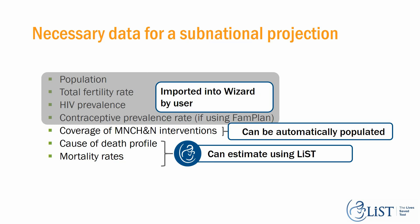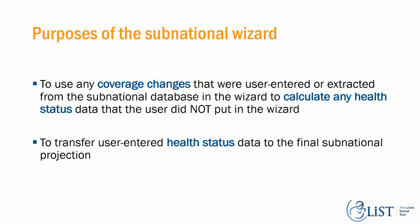When making a subnational projection, the user typically imports into the wizard: population, total fertility rate, HIV prevalence, and CPR. The wizard can automatically populate coverage of maternal, newborn, child health, and nutrition interventions. Cause of death profile and mortality rates can be estimated using LIST.